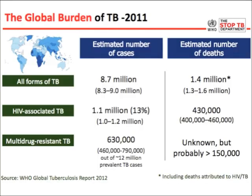So first, the burden of tuberculosis. We estimate some 8.7 million new cases of tuberculosis every year. There are about 1.4 million deaths caused by tuberculosis every year, which makes TB very much the first or second leading cause of infectious disease mortality in the world. The form of tuberculosis associated with HIV accounts for about 1.1 million or 13% of the 8.7 million estimated cases in the world — something remarkable, especially in the African continent.